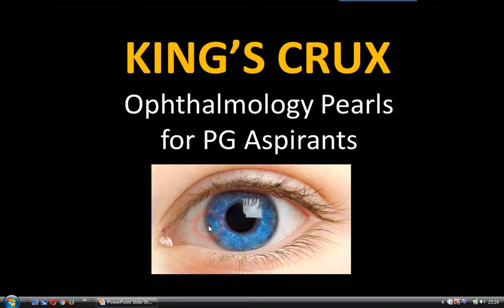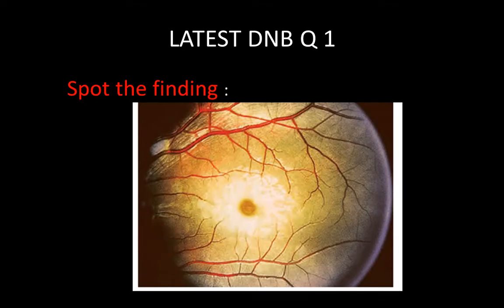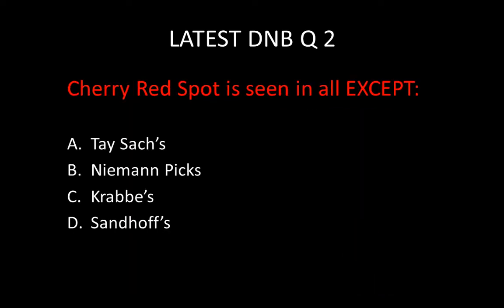Hello friends, welcome to King's Crocs, my first video-based discussion. Let me start with a very recent question asked in DNB examinations: spot the finding — what is the abnormality in this fundus picture? Now let me go to another question: cherry red spot is seen in all except?